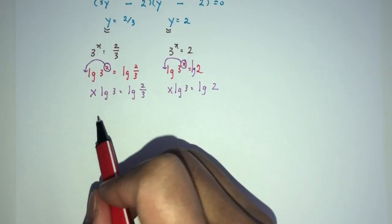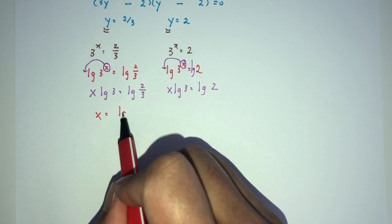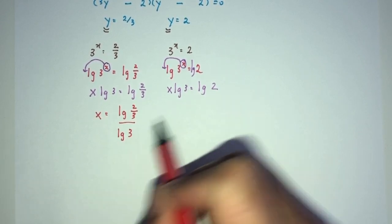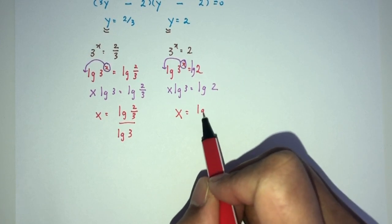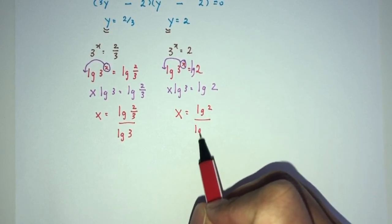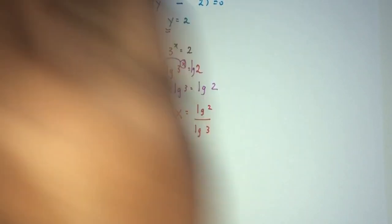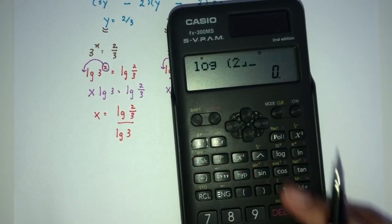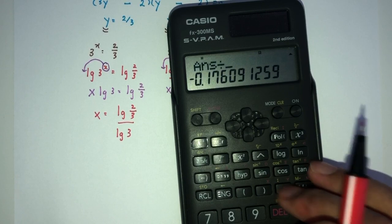So, finally, x will be, obviously, subject. That will be this over 3 divided by log 3. x will be log 2 over log 3. Simplify. Let's see what happens. Here we have log 2 over 3 divided by log 3.